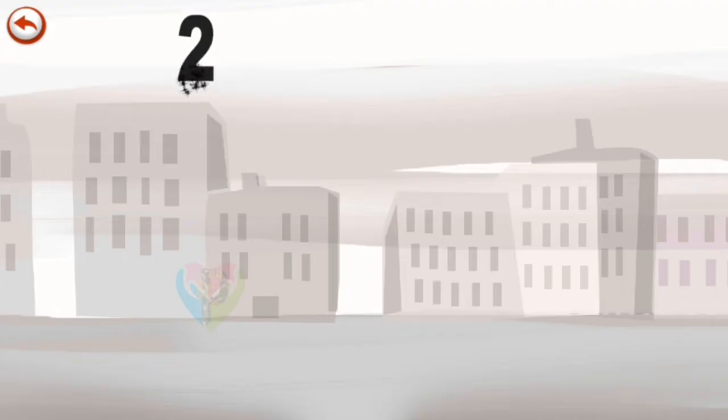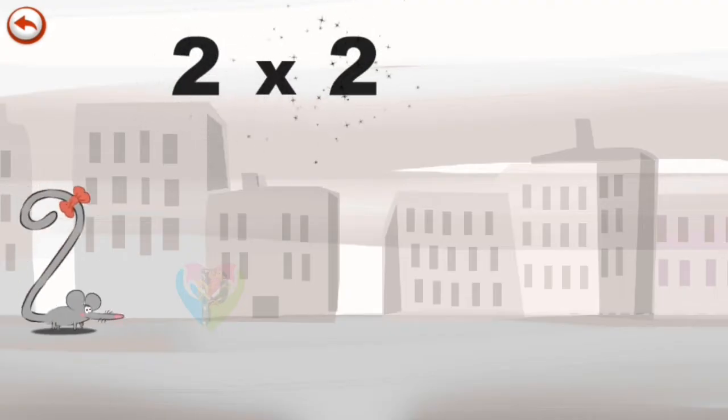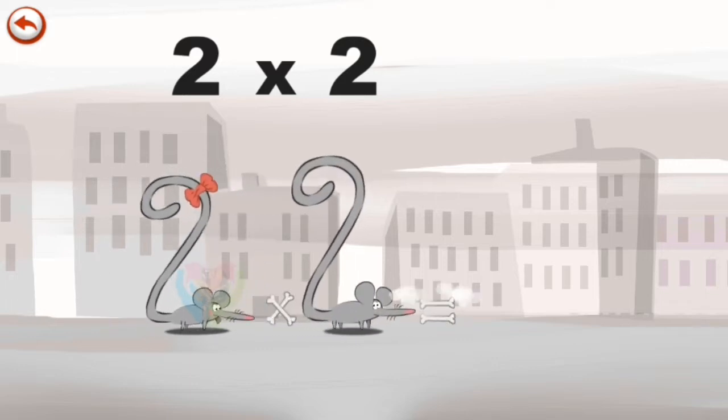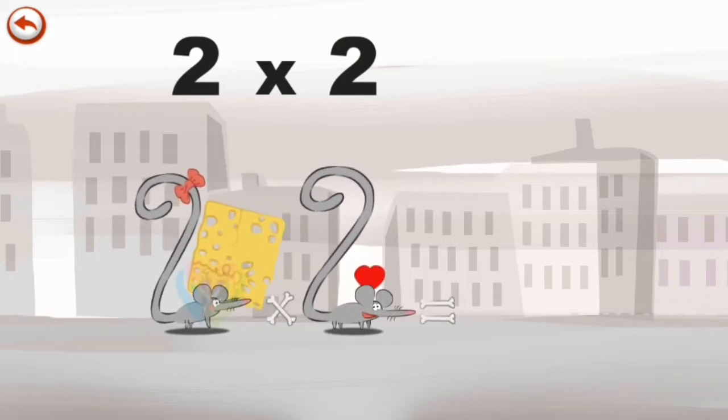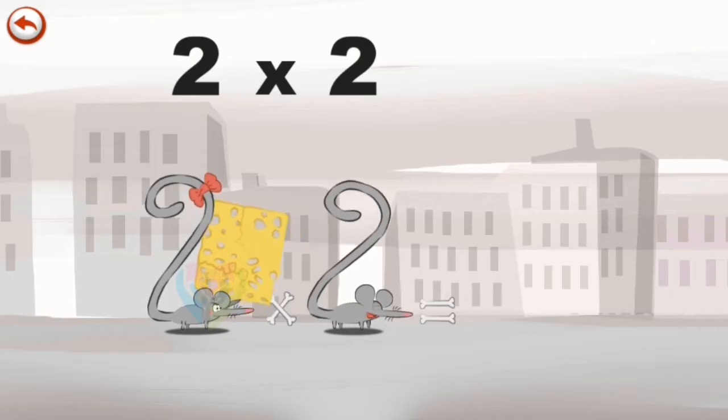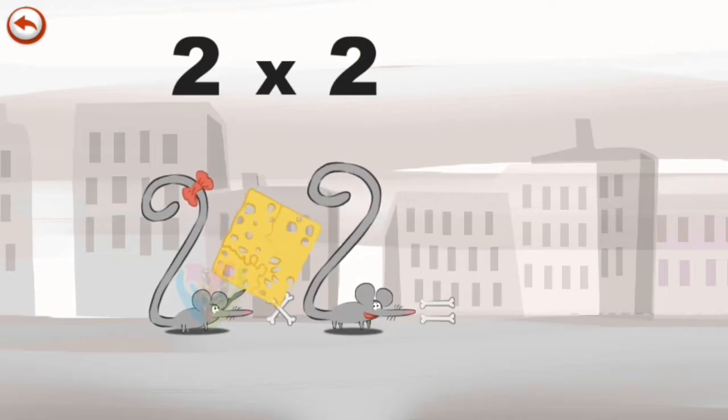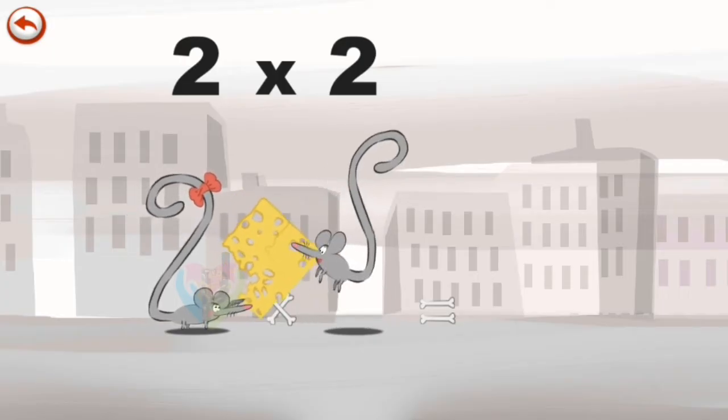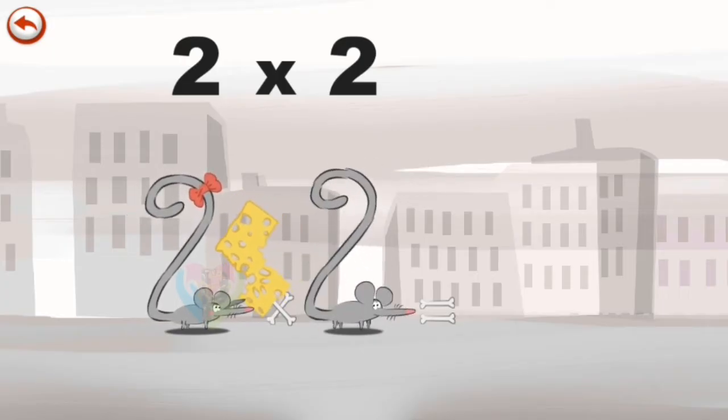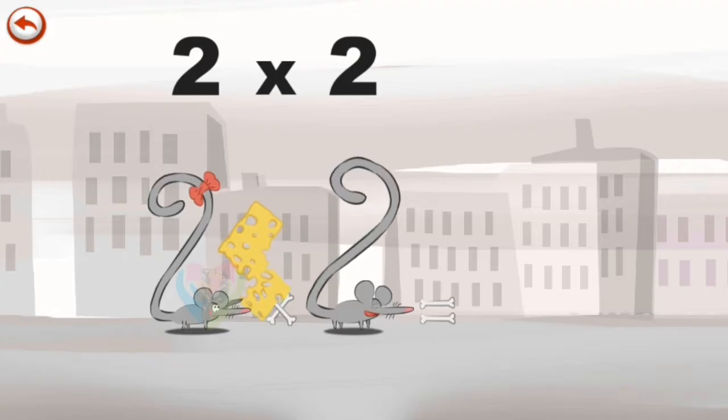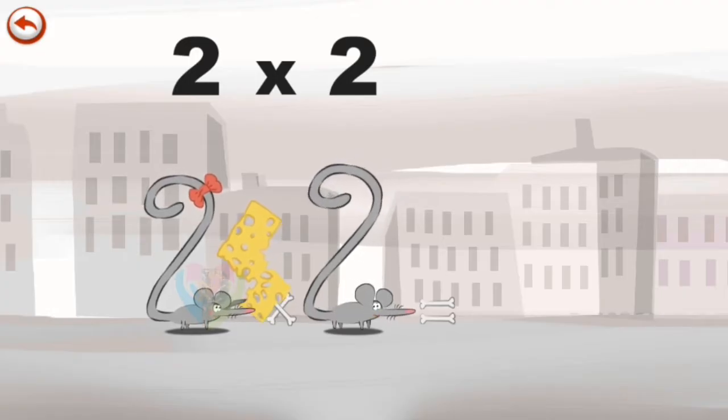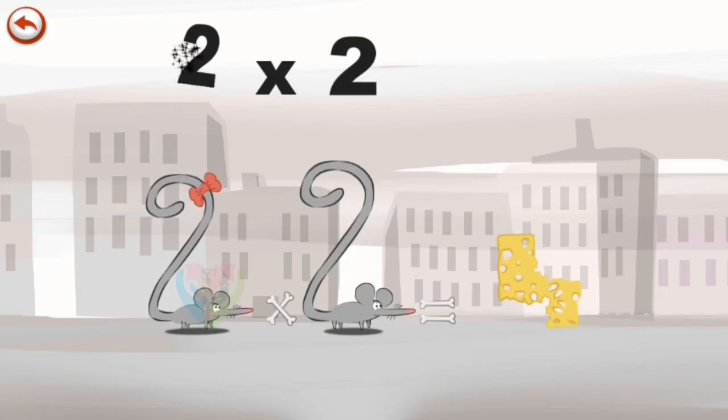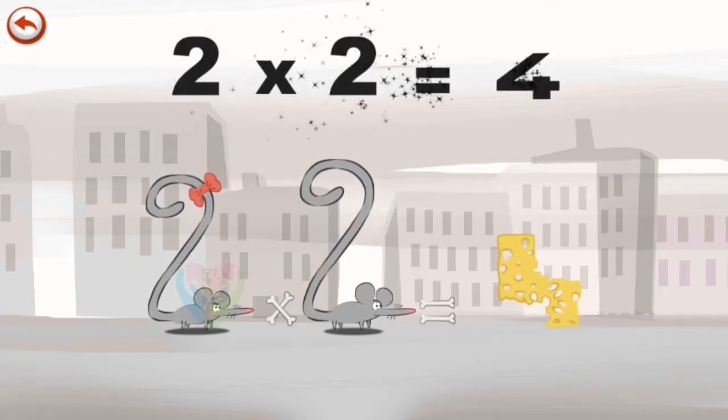What's the story of 2 times 2? When Mrs Two Squeaks meets Mr Two Squeaks, she invites him to share a magnificent slice of cheese. Mrs Two Squeaks nibbles a corner at the bottom, and Mr Two Squeaks nibbles a corner at the top. The two mice aren't hungry anymore. They put the rest of their meal to one side, which has taken the shape of a 4. 2 times 2 is 4.